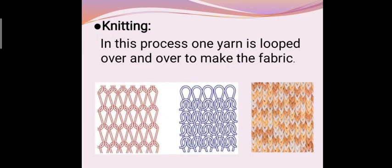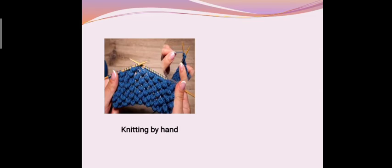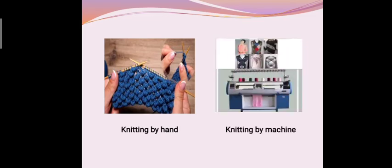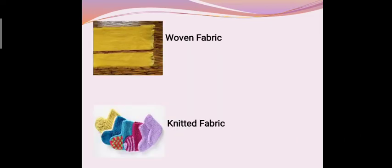Now the next process of making fabric is knitting. In this process one yarn is looped over and over to make the fabric. This is the reason when we pull a thread from a knitted sock a single piece of yarn gets pulled out continuously. Knitting can be done by hand or it can be done by machines. These two pictures are clearly showing that how in weaving two yarns are interlaced and in knitting one yarn is looped over and over.